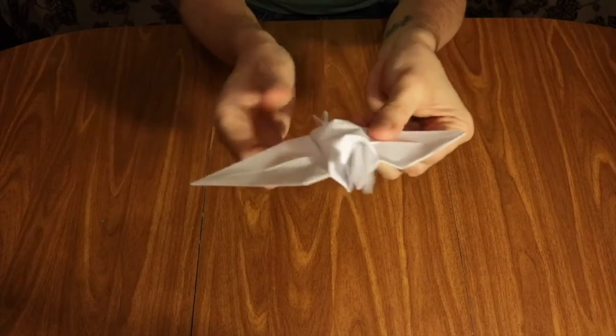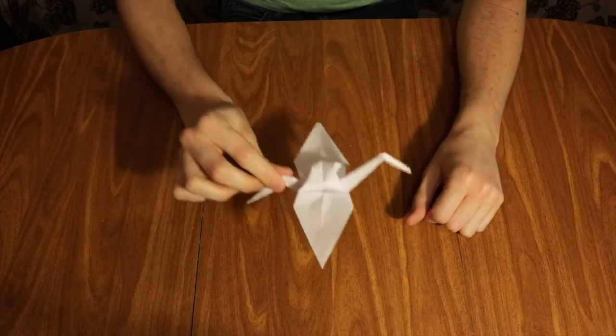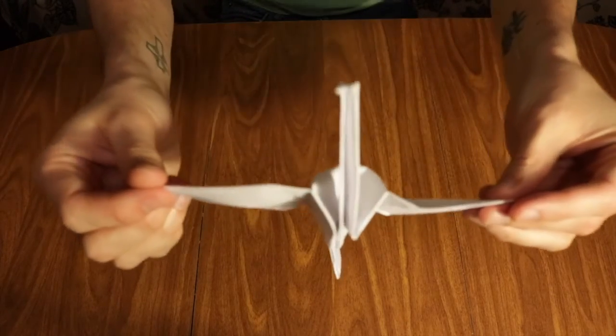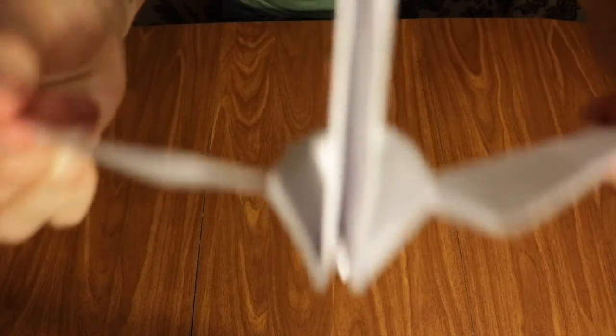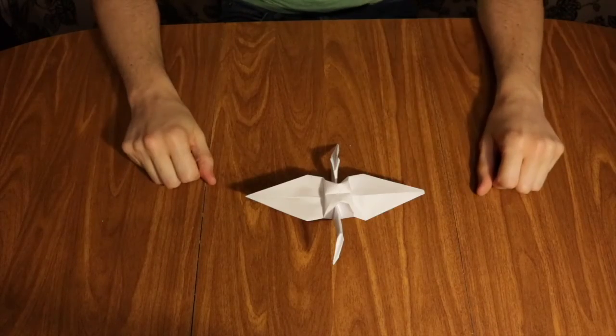Now you have a crane. Now you just need to make 999 more and you get a wish. Oh look, he wants to give you a little kiss. Great job! You did it.